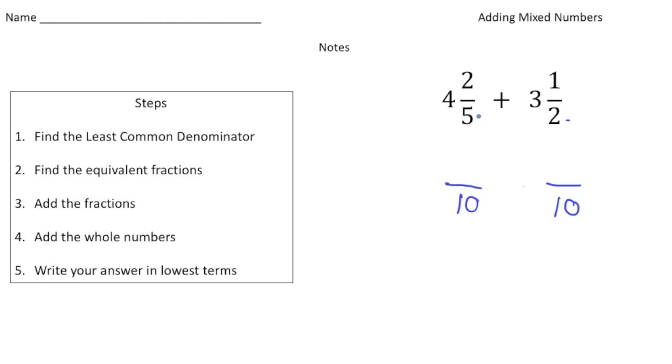Now we need to rename these fractions with ten as their denominators. I know five times two will give me ten, so two times two is four. That's equivalent. And then one half of ten is five, so one half equals five tenths.